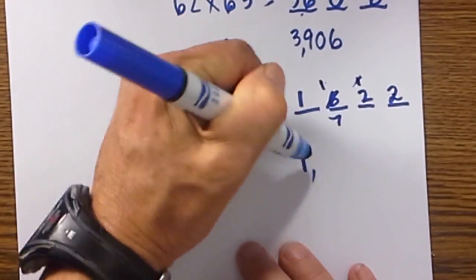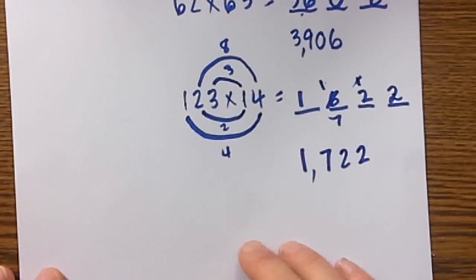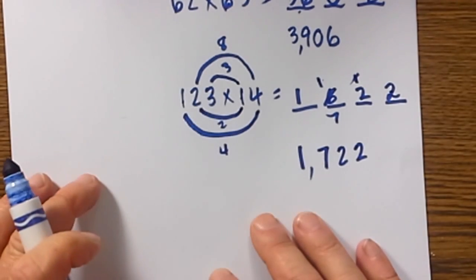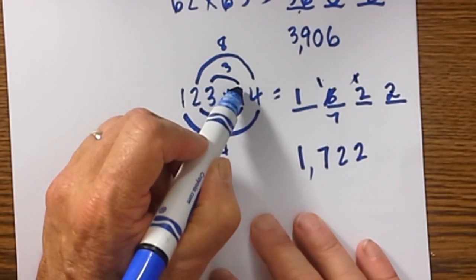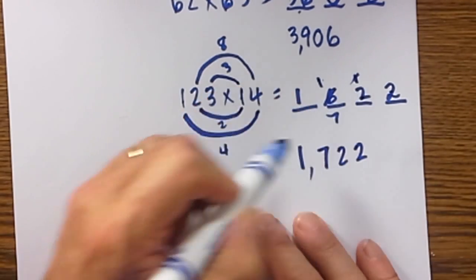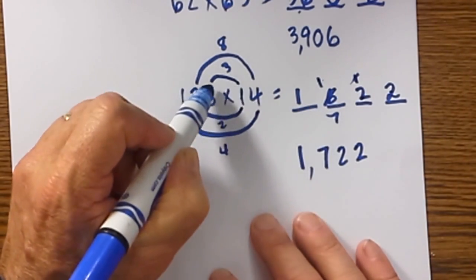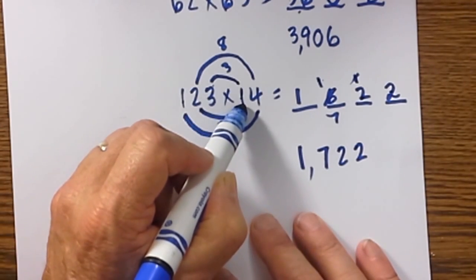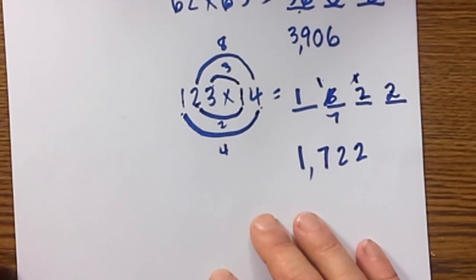So the final answer is 1722 again the rainbow method is slightly different with 3 digits but it works every time. You take for this number 3 times 1. You take for the number 3 times 1. Notice where my arrows are going. And then at the bottom you move 1 to the left. So it will be 1 times 2 and then 4 times 1.